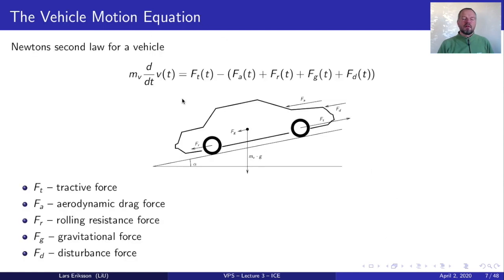The core equation in the course is the vehicle motion equation, used to look at the energy consumption of driving missions, focusing on the force requirement from a driving mission. This includes an acceleration term, air drag, rolling resistance, and potential gravitational forces.